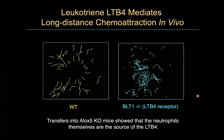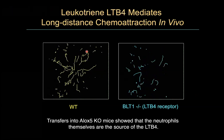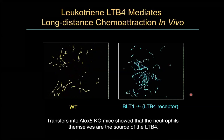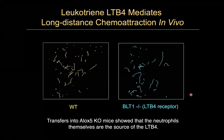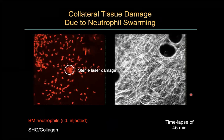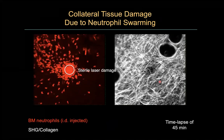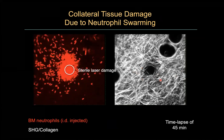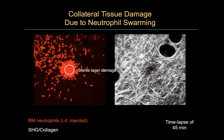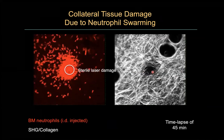In the wild type, we get the cells to come from quite a distance — hundreds of microns in a linear way. But if we eliminate the receptor for leukotriene B4, this becomes a very errant, slow process. Tim worked all this out over time. One of the things he noticed was that as the swarm occurs — where we're looking at the second harmonic channel for the dermal collagen — we wind up getting a hole where the neutrophils accumulate, and that raised an interesting question.